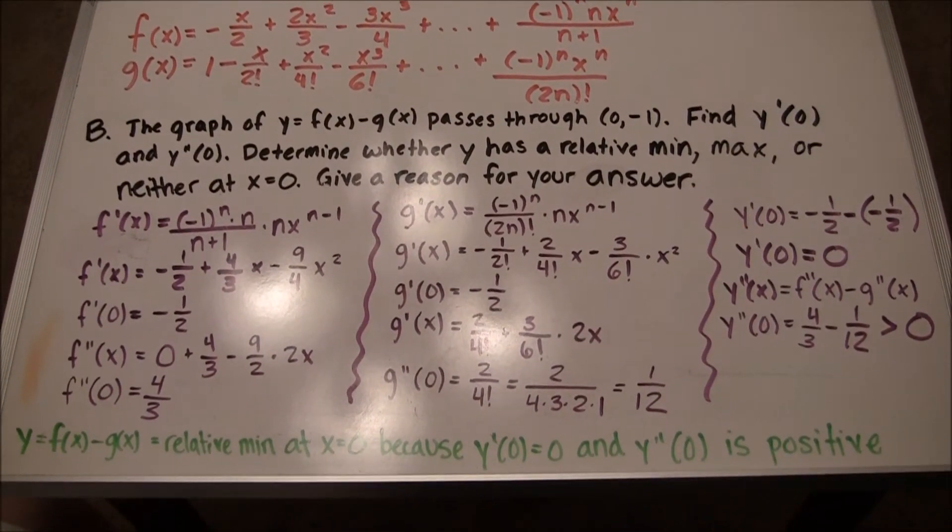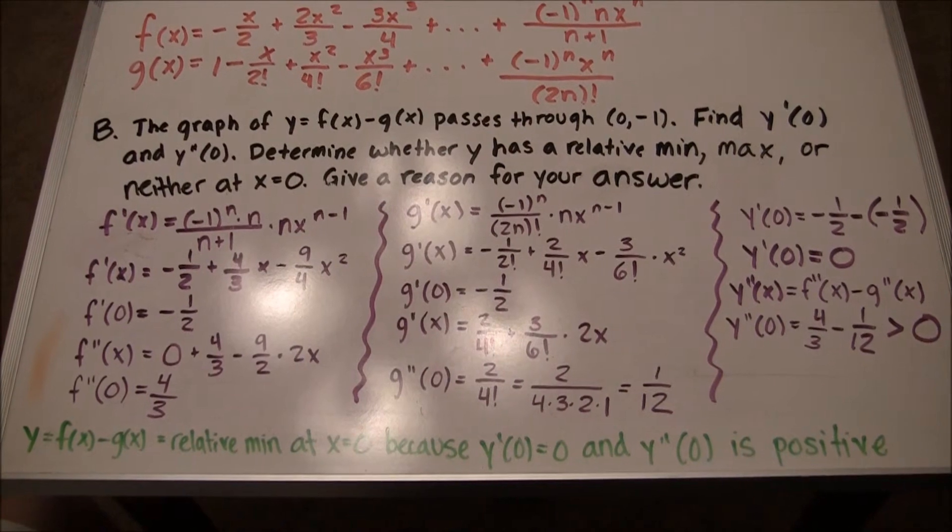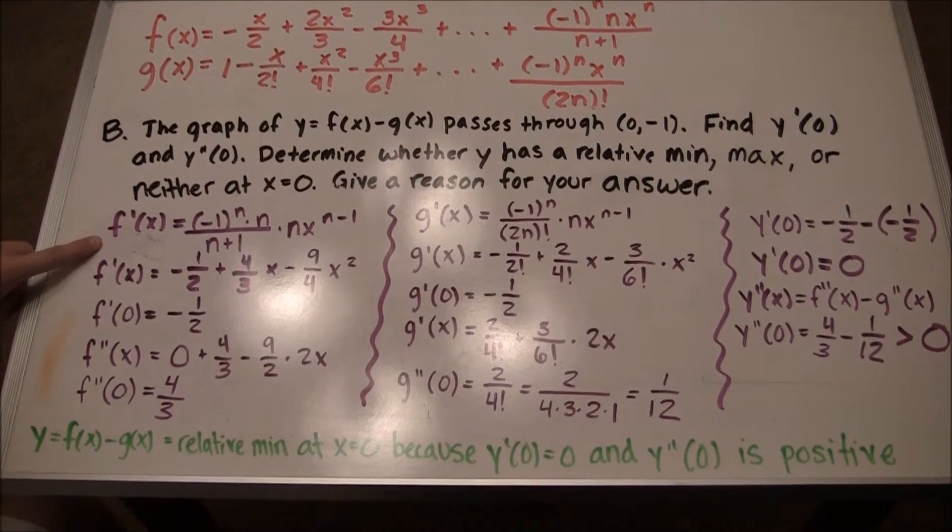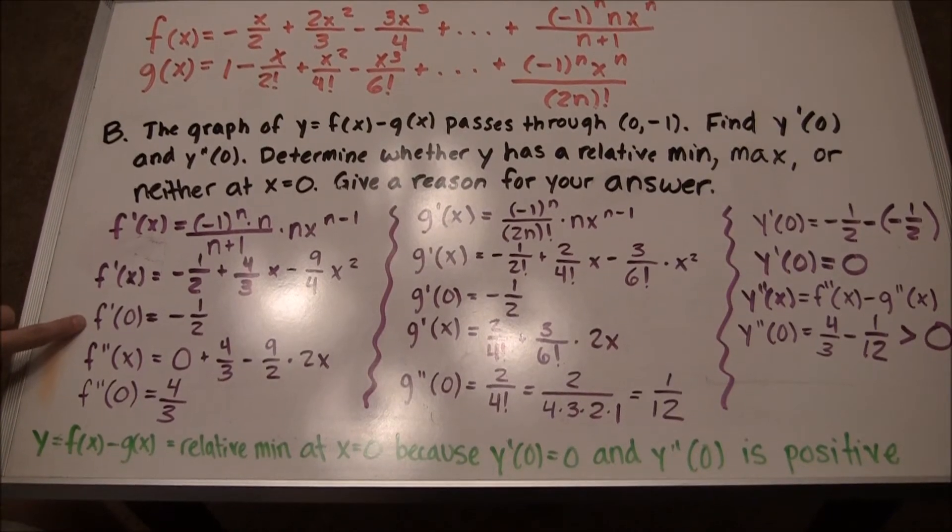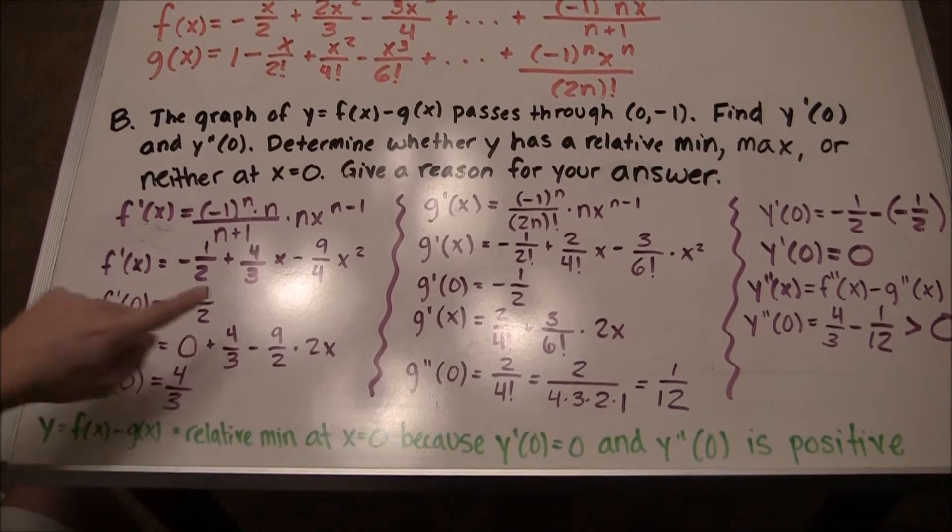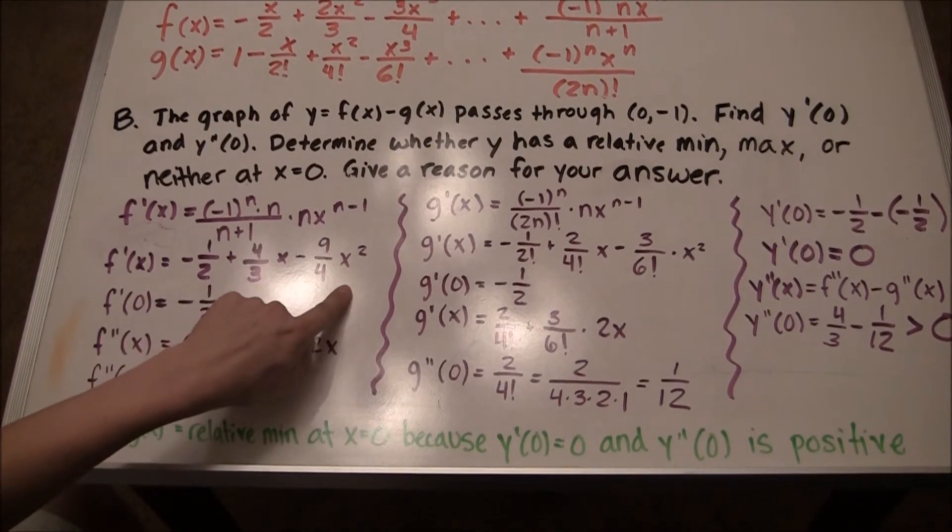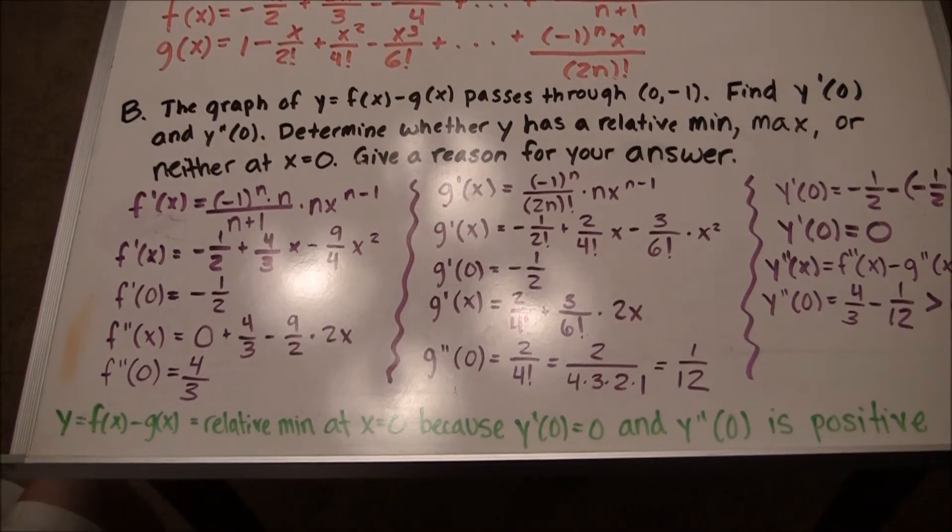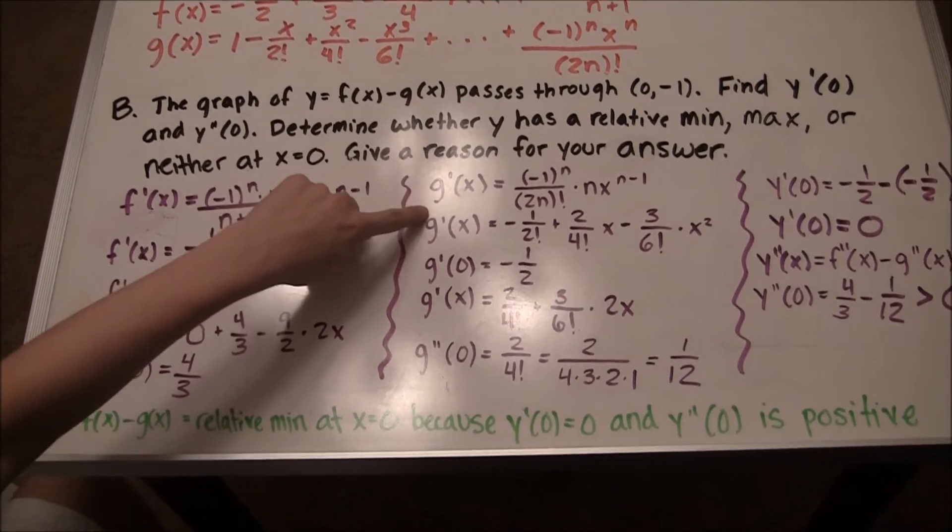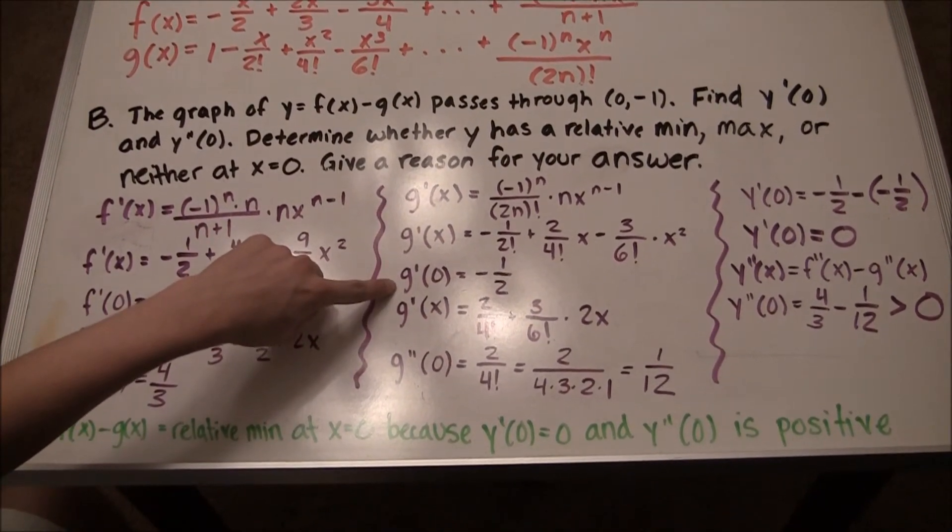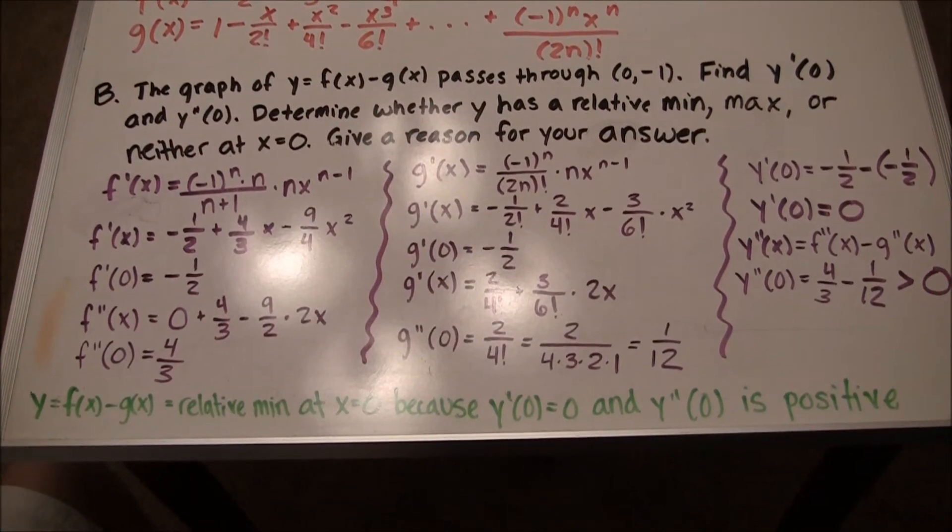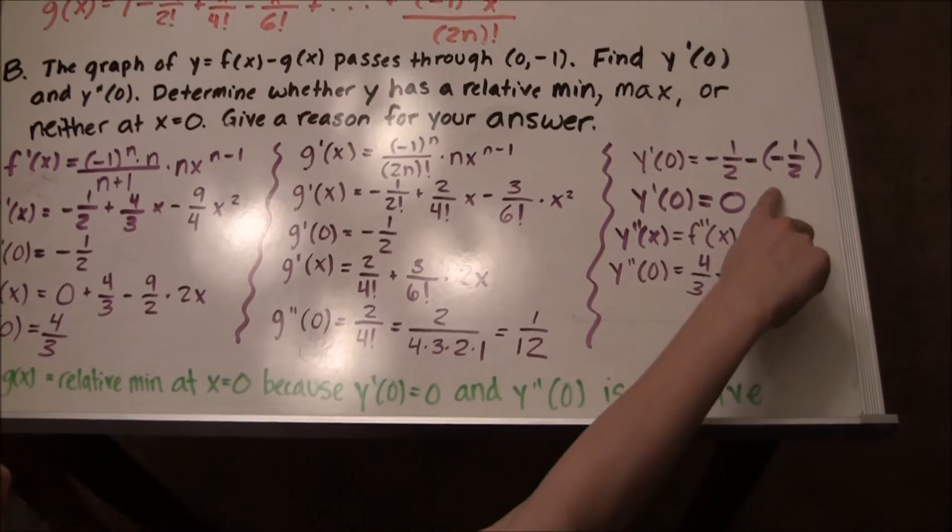F prime of x is found by taking the derivative of f of x, given by the power series. When the derivative is taken, only negative 1 half is left in f prime of 0 because the rest of the power series contains a constant times the variable x, equaling 0 when x equals 0. The same logic can be used when finding g prime of 0, as negative 1 half is the only number not multiplied by 0. Therefore, y prime of 0 equals negative 1 half plus 1 half, equaling 0.